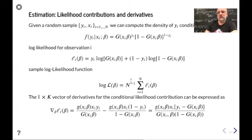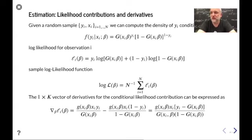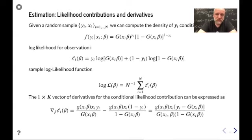Working with the average likelihood is numerically more stable, especially if you have many observations — summing millions of small numbers can produce a very large or very small number that's harder to handle on the computer. So we work with the average likelihood. In order to estimate the model, you simply maximize this function with respect to beta.